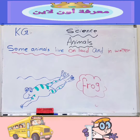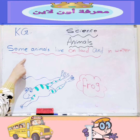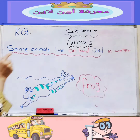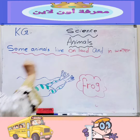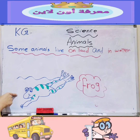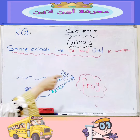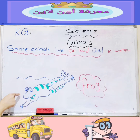By the way, we must mention that some animals can live both on land and in water. These animals are called amphibians. For example, the frog is an amphibian. It can live on land and in water.